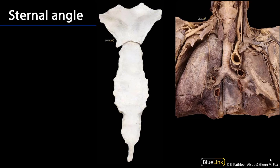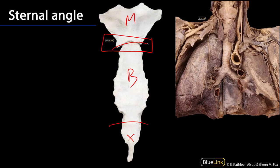So let's begin with the sternal angle. What we're looking at here is an osteological structure called the sternum. The sternum, as you recall, is tripartite. There is a manubrium, a body, and a xiphoid process. And the sternal angle is this convexity that is anteriorly facing, between the manubrium and the body.